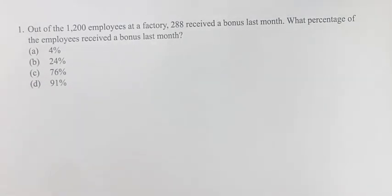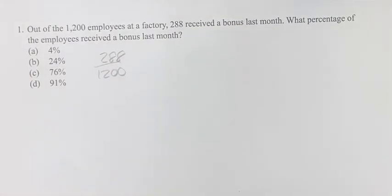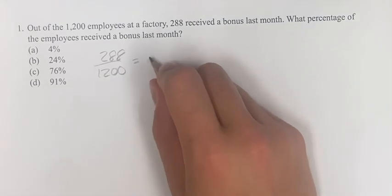There are two ways to do this. You can divide 288 by 1200 using a calculator, which is going to give you 0.24.